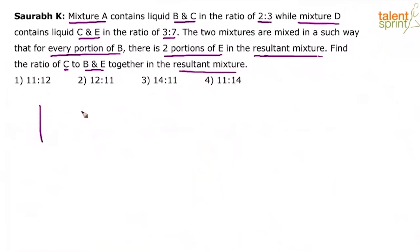Let us understand what is happening here. This is mixture A and then we have got mixture D. A has got B and C in what ratio? B is to C ratio here is 2 is to 3 and D has got C in what ratio? 3 is to 7. C is to E in the ratio of 3 is to 7.